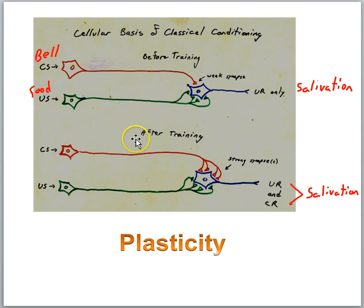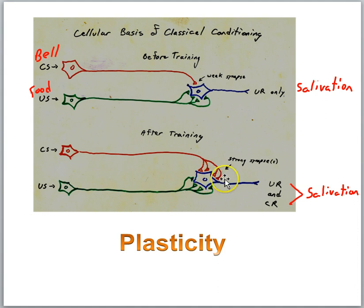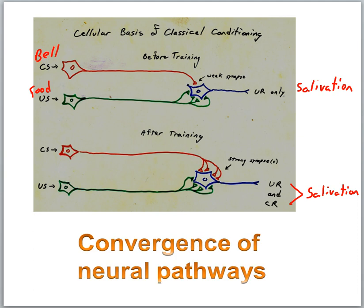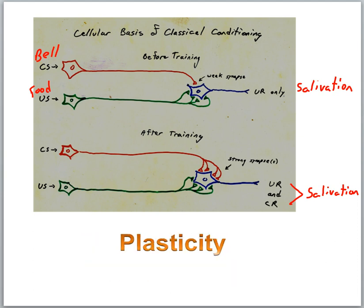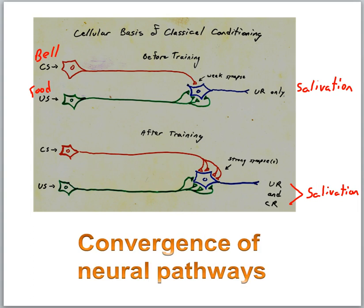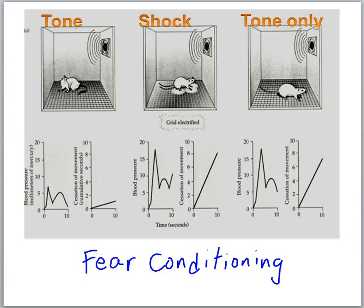At the level of neurons, in the dog's brain there's going to be a convergence of neural pathways. The bell pathway and the food pathway are going to converge on a common target cell, and then there will be neural plasticity in the bell pathway. We get the growth of new synapses such that the bell can now produce the salivation response. So we have plasticity and convergence — these are key ingredients for associating one stimulus with another, and we'll see how that plays a role in fear conditioning.